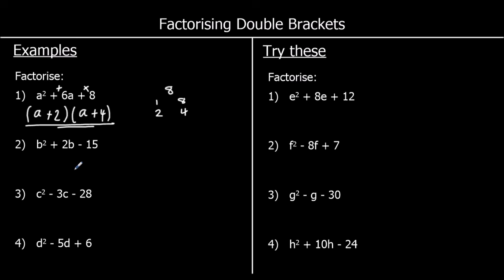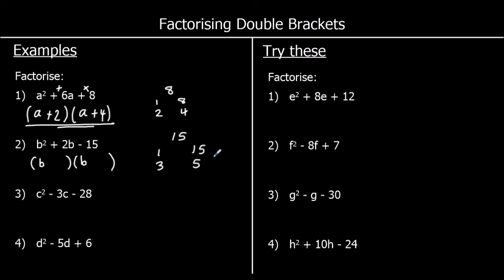The second example: b squared plus 2b minus 15. We've got a b squared, which comes from a b in both brackets. We're looking for two numbers that multiply to make negative 15 and add to make positive 2. What multiplies to make 15? 1 times 15 and 3 times 5. How can we make a 2? We need 3 and 5: plus 5 and minus 3. So 5 take away 3 is 2, and positive 5 times negative 3 is negative 15.